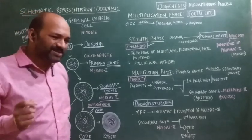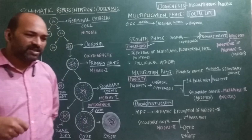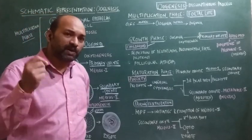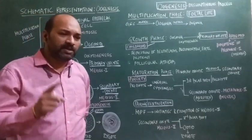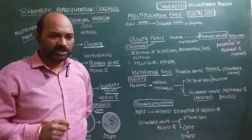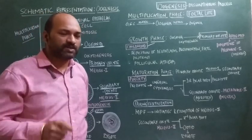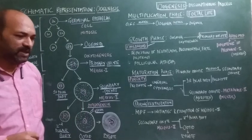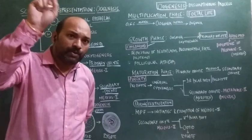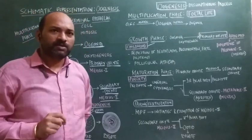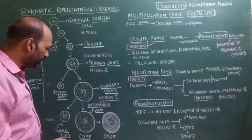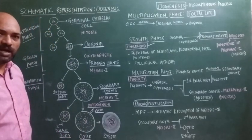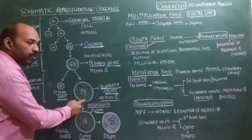The ootid is very similar to the spermatid formed in spermatogenesis — just as the spermatid was non-motile, non-functional, and immature, the ootid is also a non-functional and immature ovum.